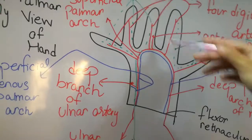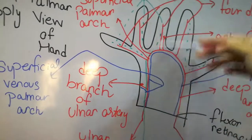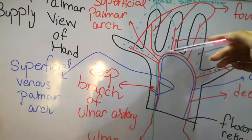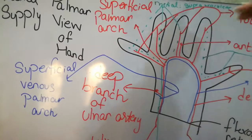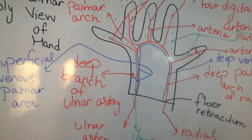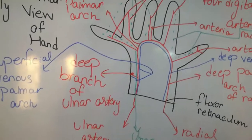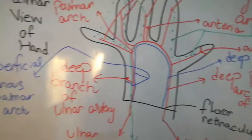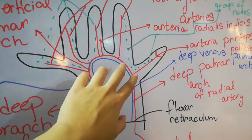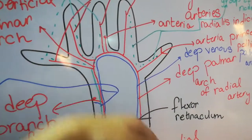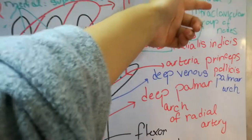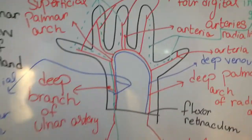For the lymphatic drainage, vessels draining from the hypothenar eminence on the lateral side follow the basilic vein, entering the supratrochlear nodes and finally draining into the lateral group of axillary nodes. Vessels draining from the thenar eminence and thumb region follow the cephalic vein and drain into the infraclavicular group of nodes.